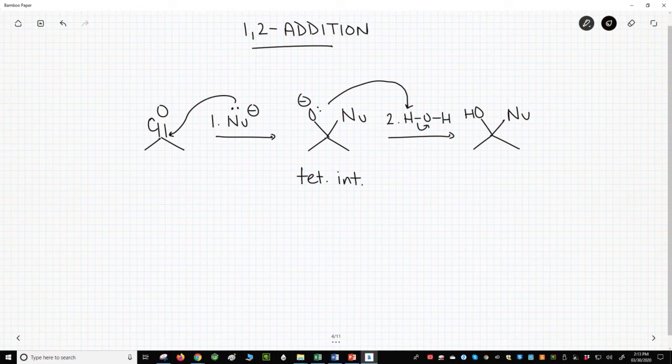This reaction is sometimes called a 1-2 addition. If you number the carbonyl with oxygen being atom 1 and carbon being number 2, then the addition places new groups on atoms 1 and 2. Great, but what does this have to do with the Michael addition?